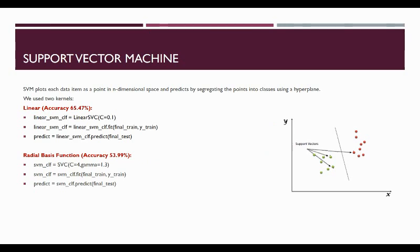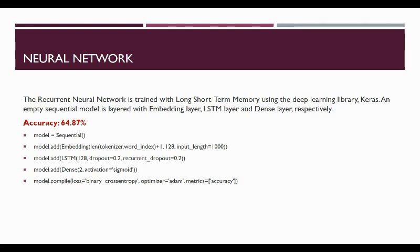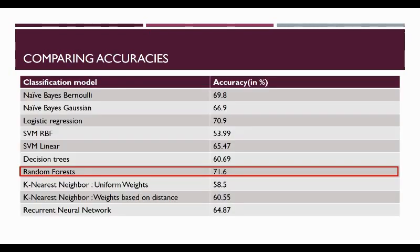We then implemented the support vector machines using linear and radial basis kernels which gave accuracies of 65.47% and 54% respectively. So, what a support vector machine does is it plots the data items on an n-dimensional plane where n is the number of features in the model. It then splits the data points by finding a hyperplane that can differentiate between the two classes very well. Then, we implemented the artificial neural network for which we use the Python deep learning library, Keras. The recurrent neural network is a sequential model layered with embedding LSTM and dense layers which results in an accuracy of 64.87%. On comparing the accuracy of the predictions received from all the models implemented, we see that the random forest model gave the highest accuracy of approximately 72%.